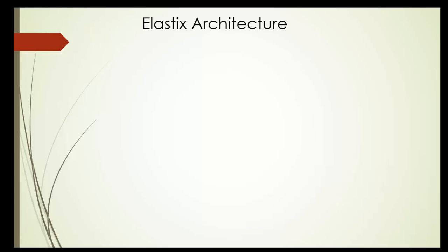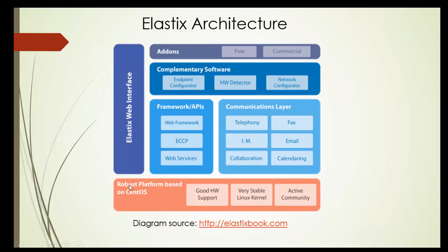Elastix architecture: in this diagram, as you can see, the bottom layer is the operating system, which contains a very stable Linux kernel with good hardware support.